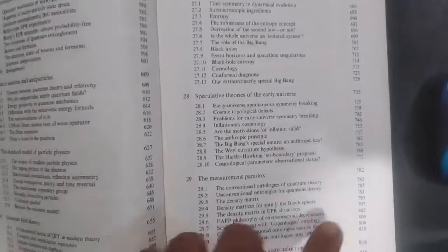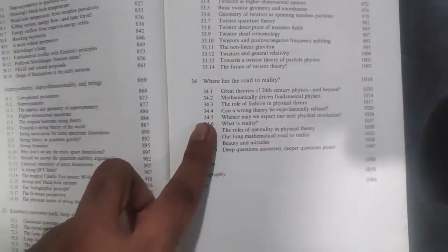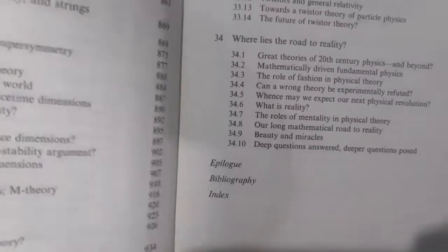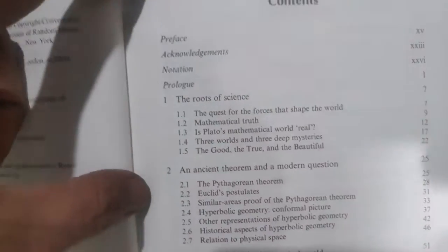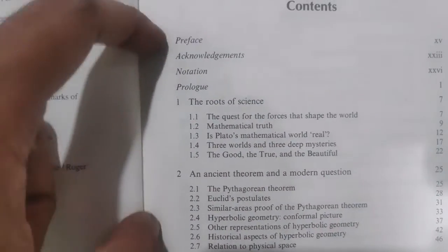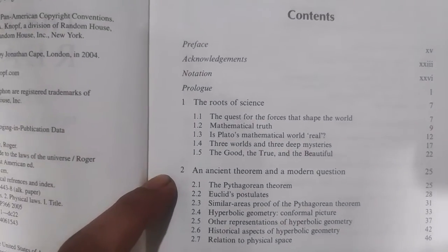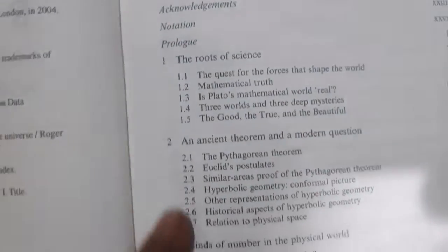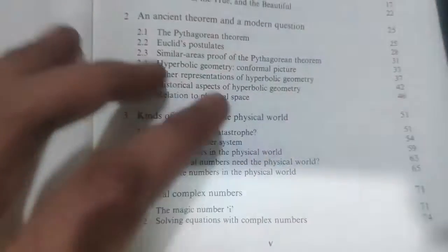There are overall 34 chapters and around 1,000 pages of this book, summarizing our understanding of the physical universe and its underlying mathematical theory. Anyone interested in understanding theoretical physics and mathematics should find this book very useful.